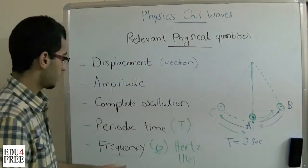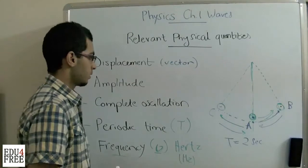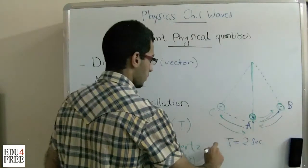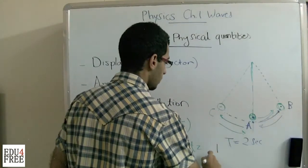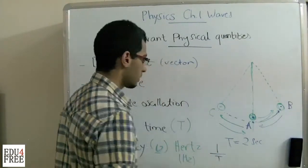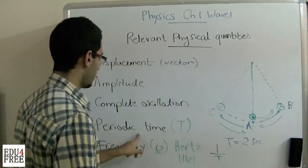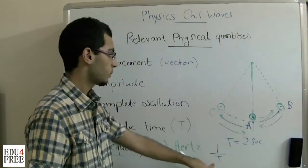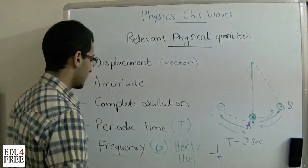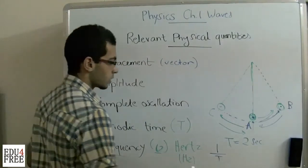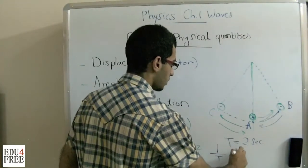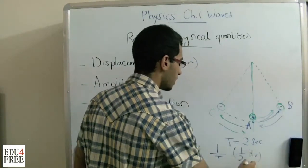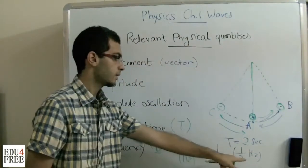If you want to get the value of the frequency, we do the following: 1 over T — one over the periodic time. In order to get the frequency, that will accordingly be 1 over 2 Hz. So the frequency of this pendulum is half Hz.